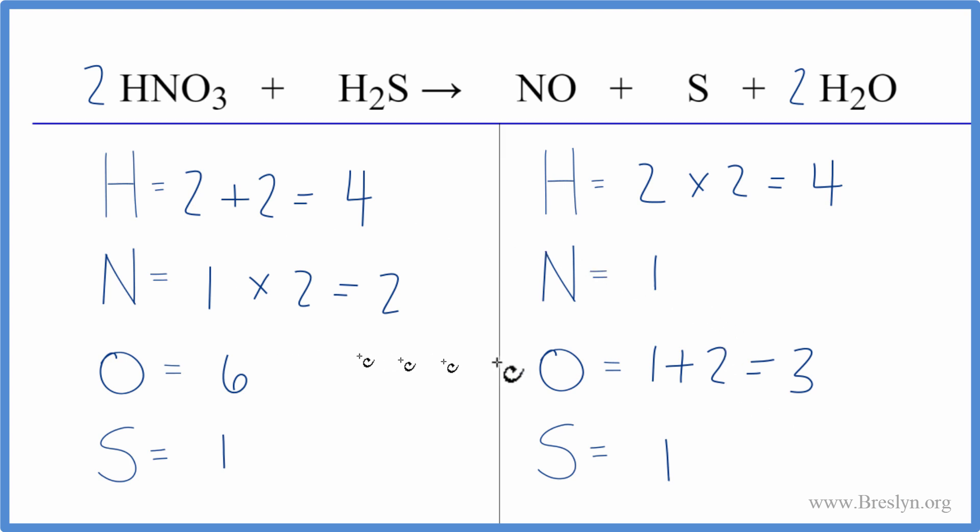Why don't we balance the nitrogens and see what that does. So we could put a two in front of the NO, one times two. That would give us two nitrogens and those would be balanced.